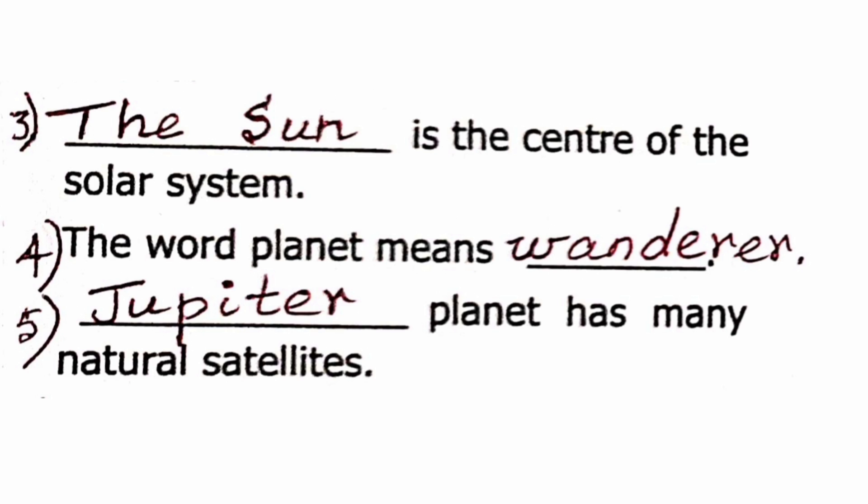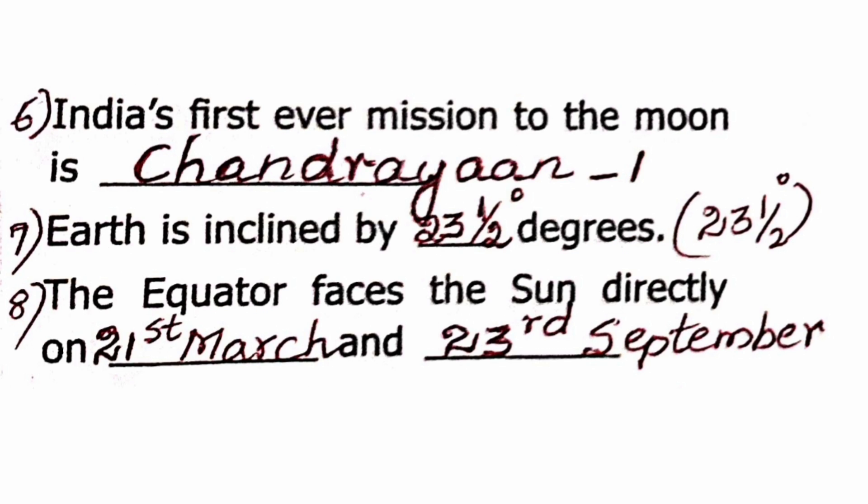Question 3: The Sun is the center of the solar system. Question 4: The word Planet means Wanderer.